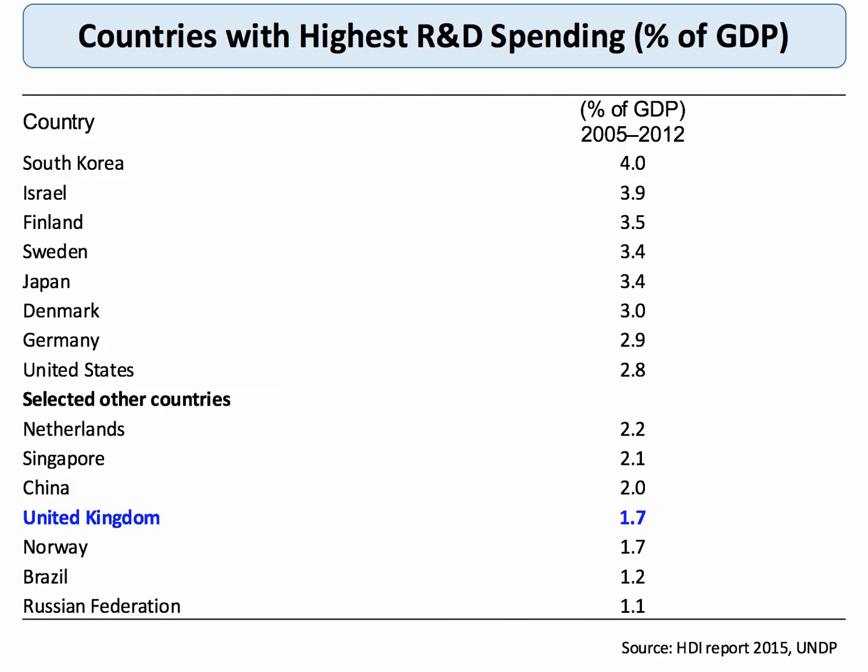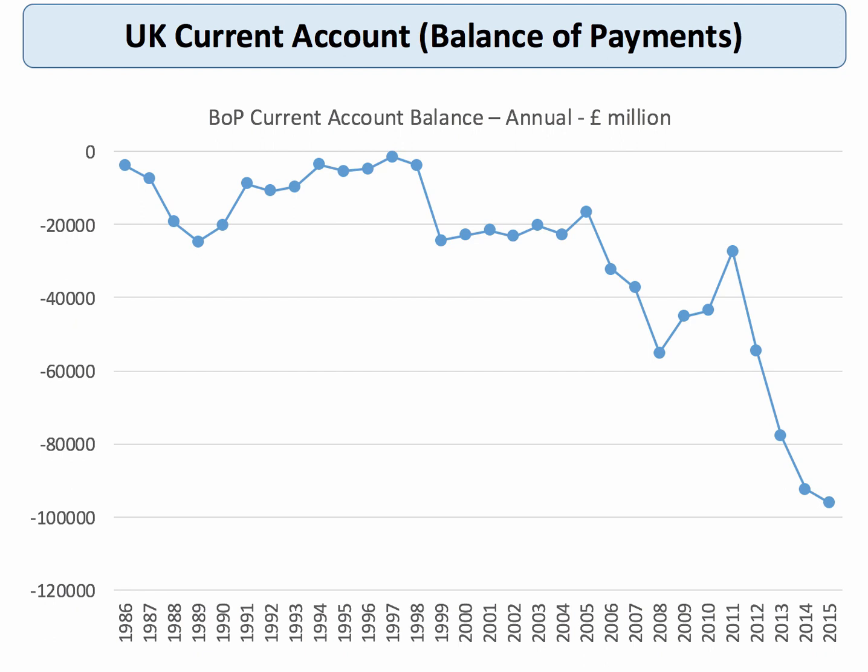Another supply-side challenge is the lack of research and development spending. Whereas South Korea allocates 4% of GDP to R&D and Israel just behind at 3.9%, the UK invests less than many competitive countries including China — we're down at 1.7%. This is the R&D gap. One consequence of insufficient investment and R&D is an increasing current account deficit. In 2015, the current account deficit was nearly £100 billion — the highest since 1948 as a share of GDP at about 5%. This is symptomatic of supply-side weaknesses in the economy.